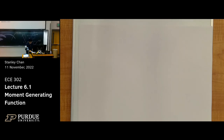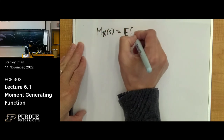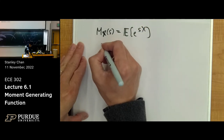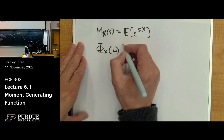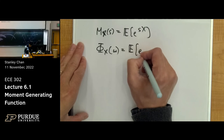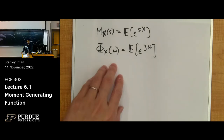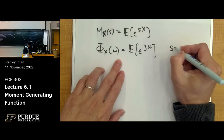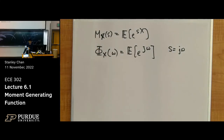The characteristic function is the special case of the MGF. The moment-generating function is E[e^(sX)]. The characteristic function has symbol φX and variable omega: it is E[e^(jωX)]. So this means you define S = j·omega. The reason for introducing the characteristic function is that you want to use the Fourier transform table, which is a lot more detailed than your moment-generating function table.